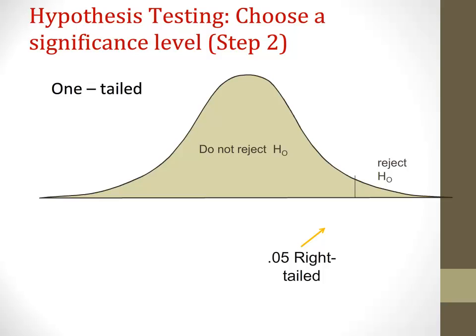Basically, you're putting all your eggs in one basket. Alternatively, if you have a strong theoretical and empirical basis to predict group A will perform worse than group B, you would put all your eggs at the other side of the tail, and your 0.05 would appear at the left or low end. A one-tailed test or directional hypothesis should only be used when there's a strong a priori justification for predicting the direction of the expected difference; otherwise, a two-tailed test should be used, which is usually the case in educational research.